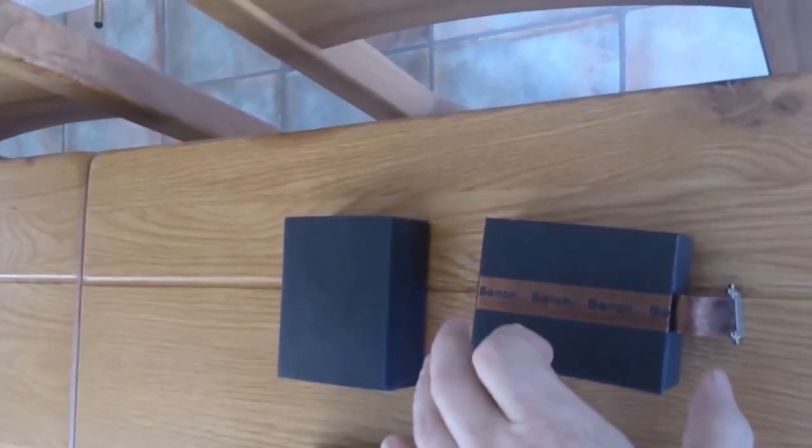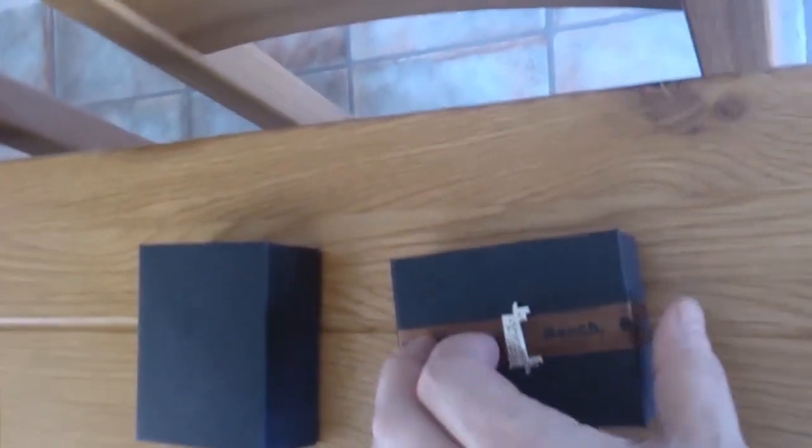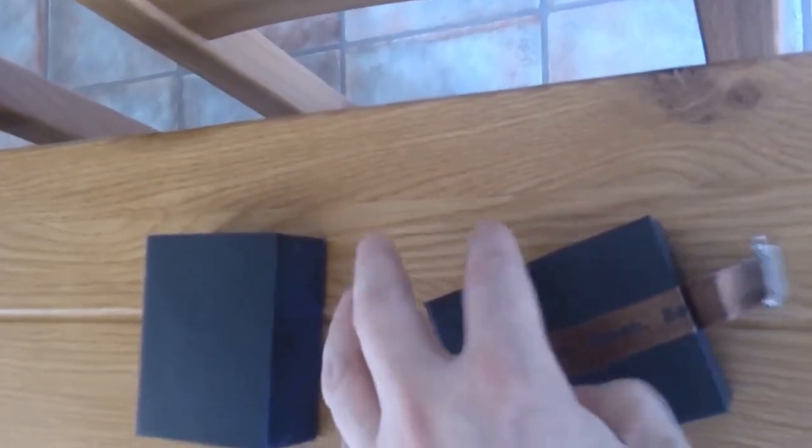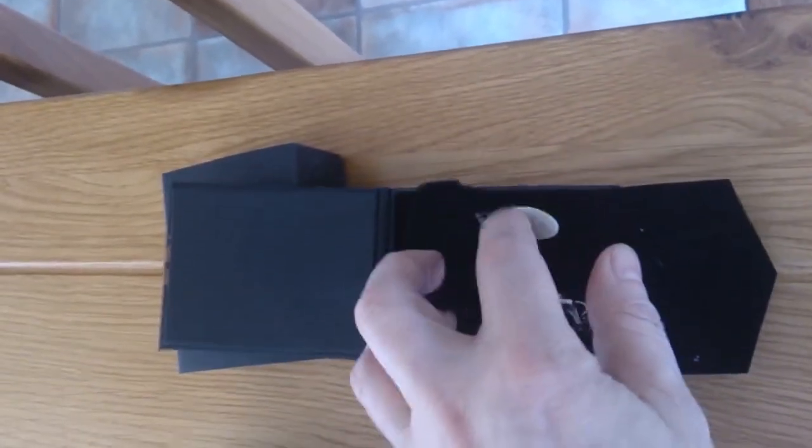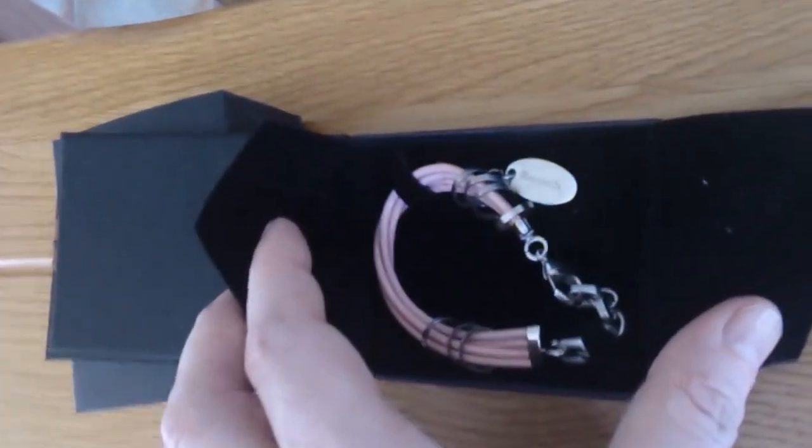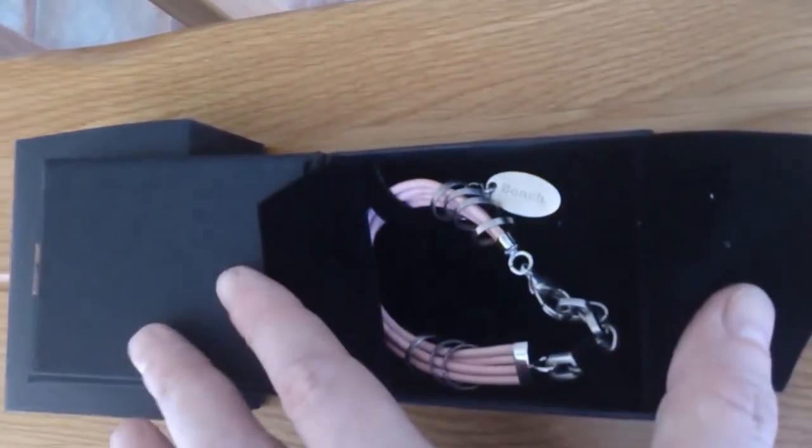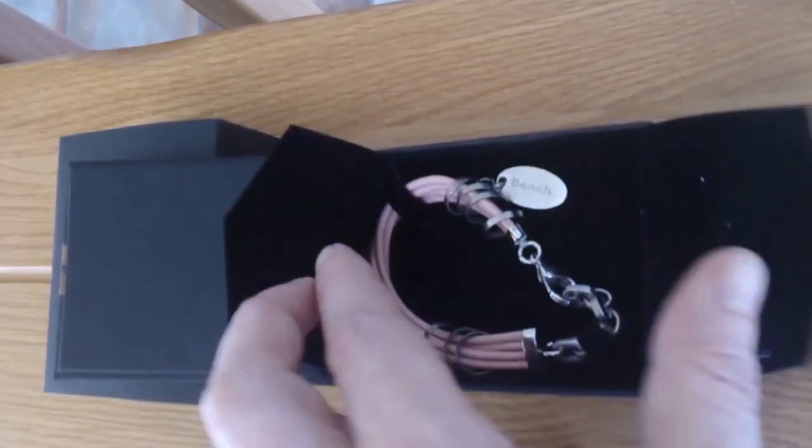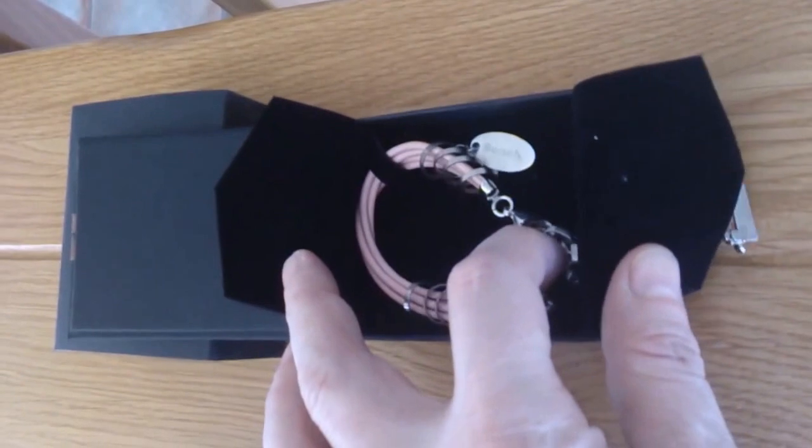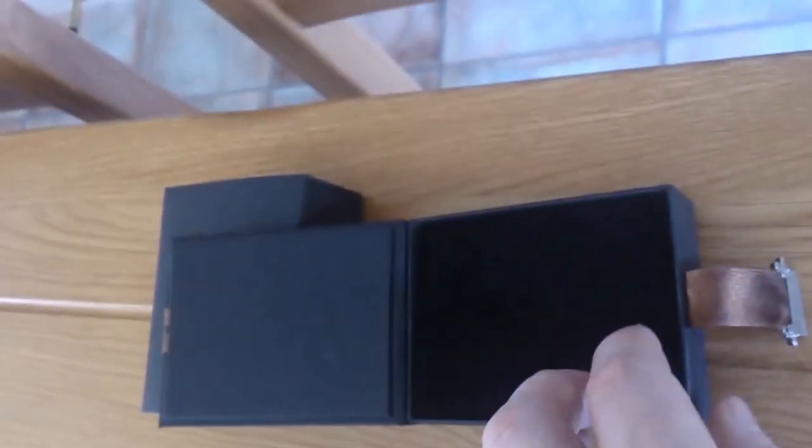Without further ado, let's have a look. The first one, I've left this one closed so you can see the packaging. It's original Bench in a Bench small jewelry box. Here's the first one. That's like a pink bracelet with a Bench logo here. It's a cord bracelet with metal fastenings and a chain effect there. If that's the one you prefer, just type in the comment box number one.